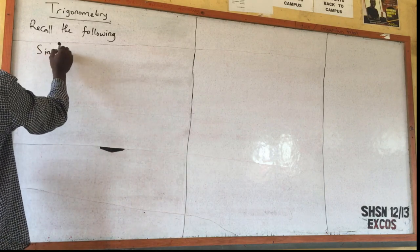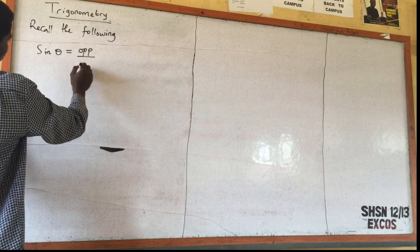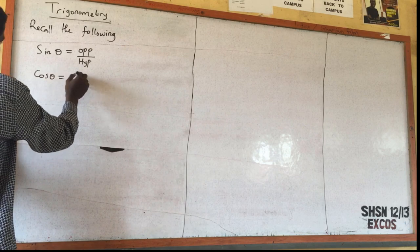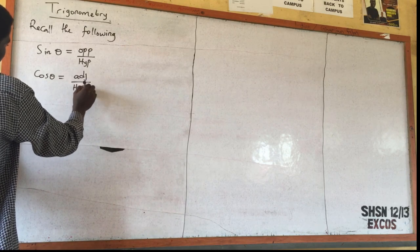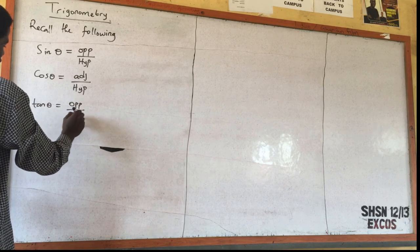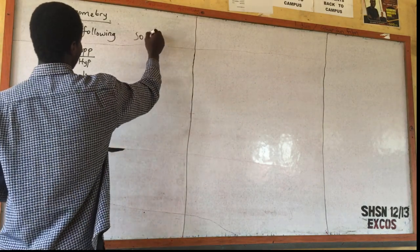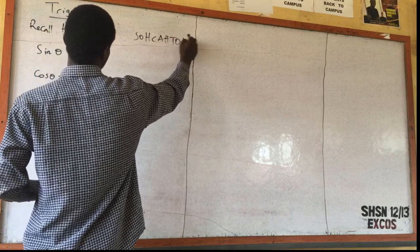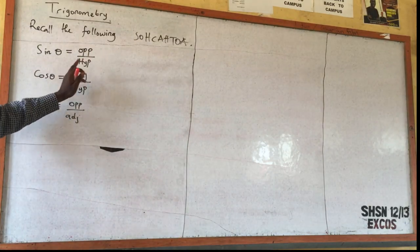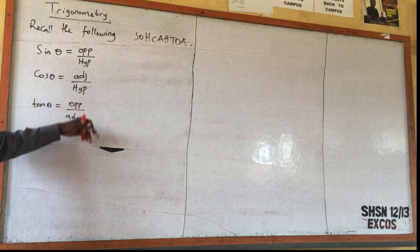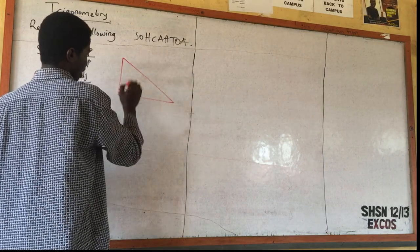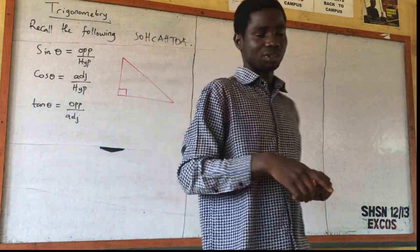Sine theta is opposite over hypotenuse. Cos theta is adjacent over hypotenuse. Tan theta is opposite over adjacent. You can record this from SOH-CAH-TOA. This is the basis of trigonometric ratios. When you are given a right angle triangle — a triangle where one of the angles is 90 degrees — and you are given an angle, say theta.